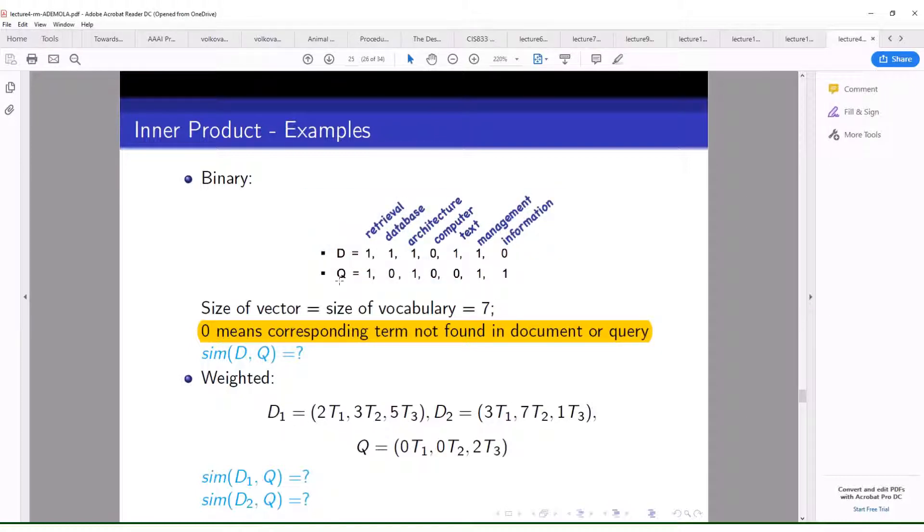Similar thing with your query: if you write your query, if the term computer is not in your query then it will be given zero at that position, and if architecture is in your query it will be given one. So now what your Jaccard coefficient is saying is...